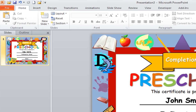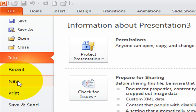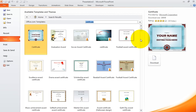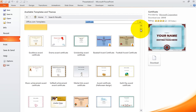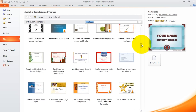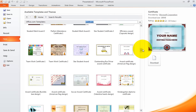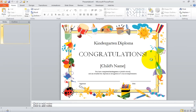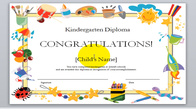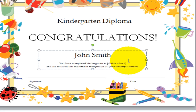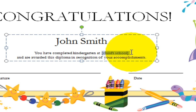Let's go to the second certificate. Go to File, New, type 'certificate' and click search. I'm looking for the kindergarten diploma, so I'm scrolling down by clicking and holding the scroll bar. There it is right there. Click on it, then click Download. Remember, we're looking for the cursor to turn into the eye. Click right there and type the child's name. Click right here and drag the mouse, then type the name of your school.